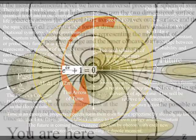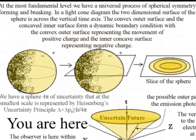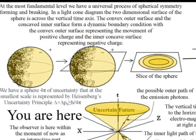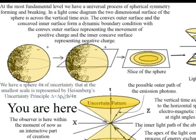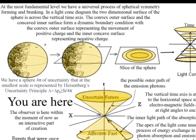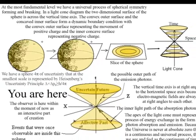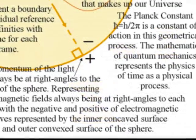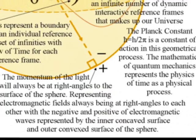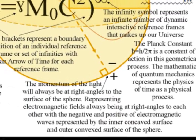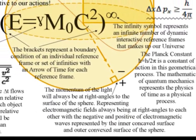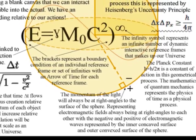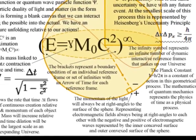An interior of a sphere naturally forms three-dimensional space, and this dynamic process also gives us a geometrical reason for positive and negative charge, with the outer convex surface representing positive charge, and the inner concave surface representing negative charge.